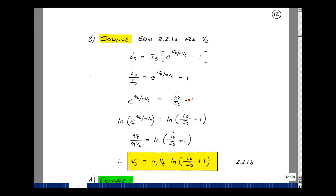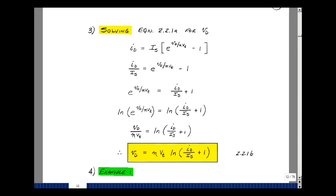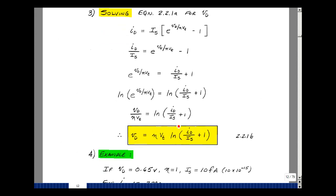Take the natural log of both sides of the equation, and the natural log of e is whatever the exponent is, and so it's just going to be V_d over eta V_t, and then the natural log of this side of the equation is just this expression. If you cross multiply by eta V_t, then you have that V_d is equal to eta V_t times the natural log of I_d over I_s plus 1.